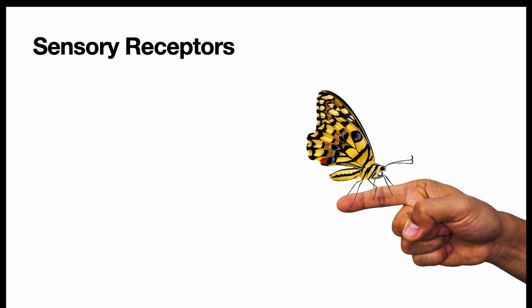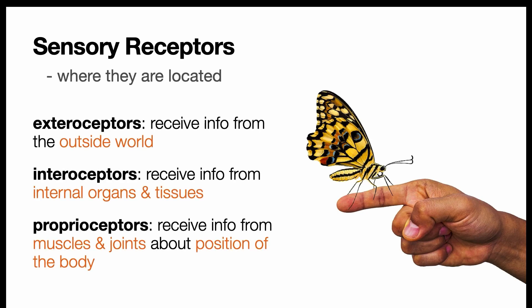Most often, sensory receptors are arranged on the body in a way to detect sensory stimuli from the environment, outside of the body, but that isn't always the case. There are three categories of sensory receptors based on where in or on the body they are located.